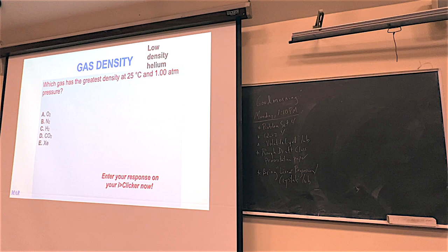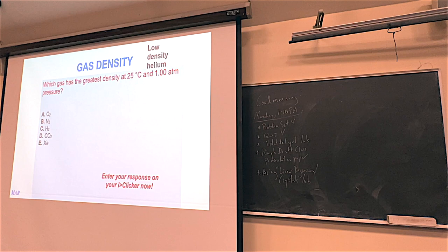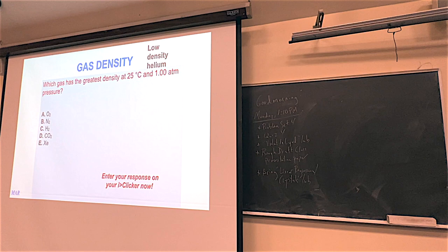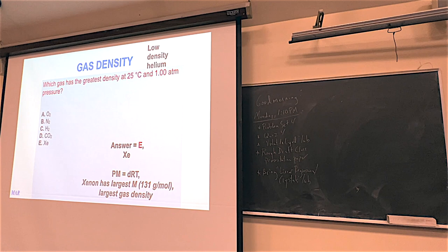Here's a question you might see: which gas has the greatest density? They're all at the same temperature and pressure, so to answer this, figure out which has the highest molar mass. Hydrogen is about 2 g/mol, N₂ is 28, O₂ is 32, CO₂ is 44, and xenon is 131 g/mol — by far the heaviest. So we'd predict xenon would have the biggest density of all of them.